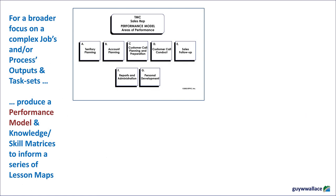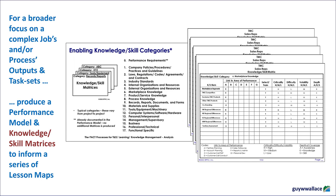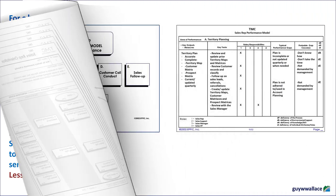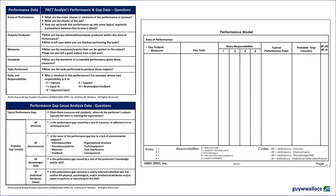For a broader focus on a complex job and/or a process with outputs and task sets, you would first identify the areas of performance, then produce performance model charts, and then knowledge and skill matrices that would inform a series of lesson maps. Performance modeling, in the way I approach this, is to first identify what I call the areas of performance — also known as major duties, key results areas, or accomplishments. Many different names for this concept of first doing a work breakdown structure of the performance.